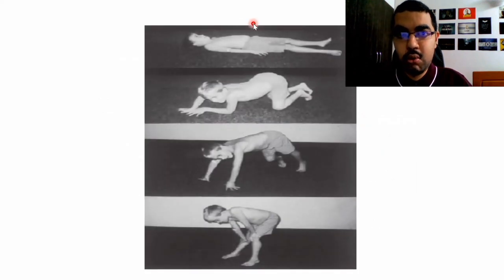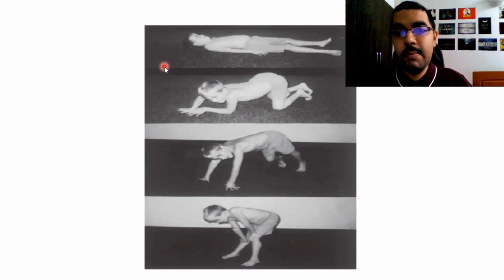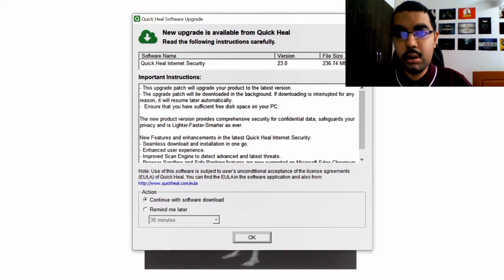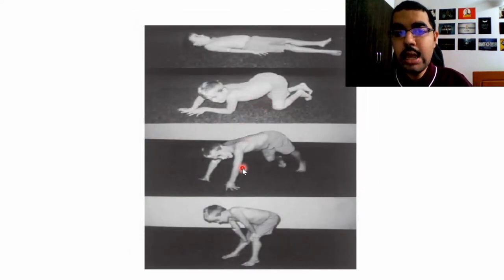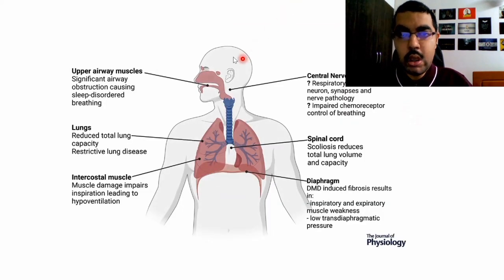This is the Gower's sign, which is a characteristic sign for people with muscular dystrophy. If any doctor notices this in a child, please help them contact a neurologist so it can be diagnosed early. Here the child is getting up from the floor — he takes support of the floor, and then with support of the thighs, is able to rise. This Gower's sign is very specific for Duchenne muscular dystrophy.